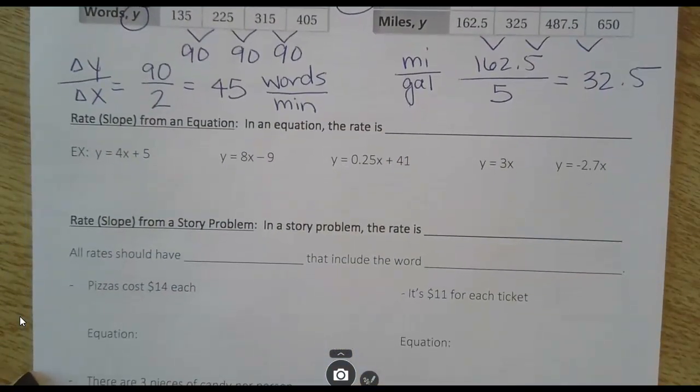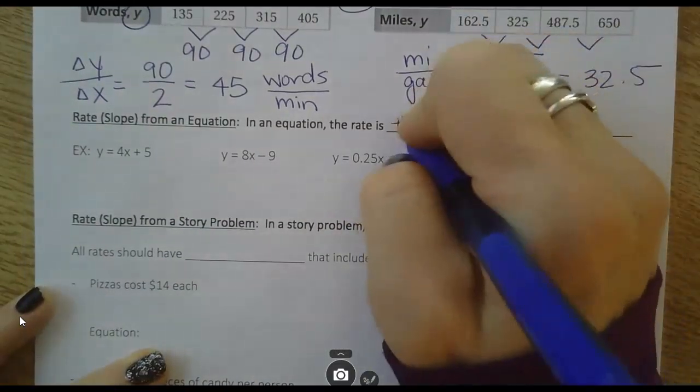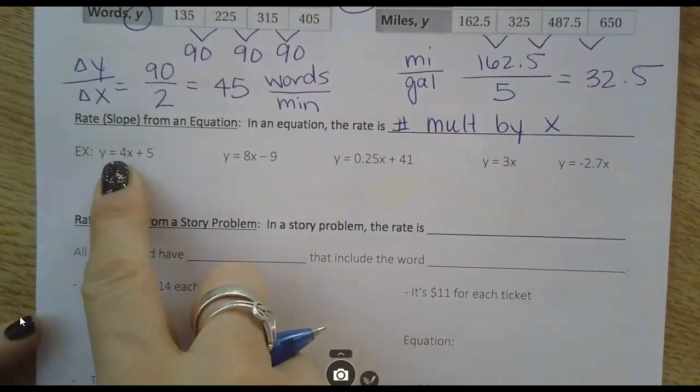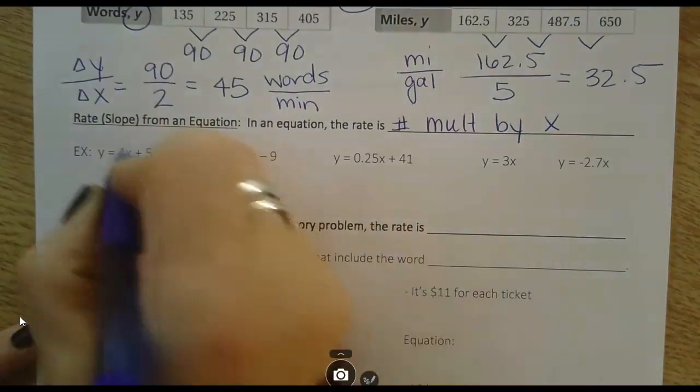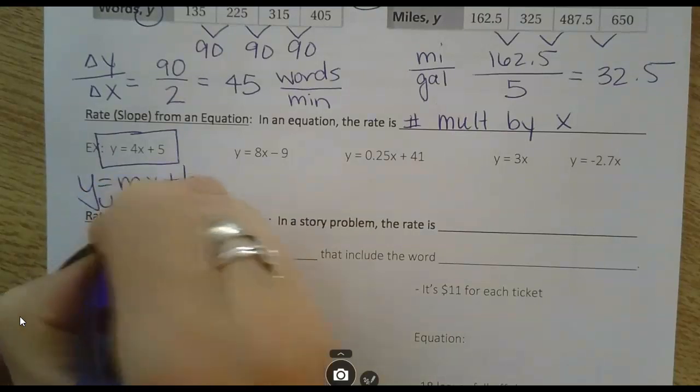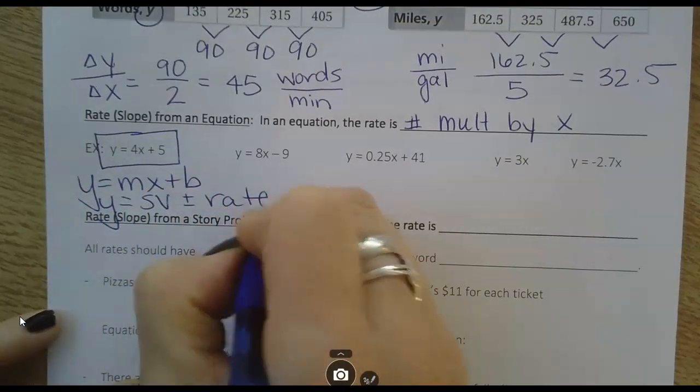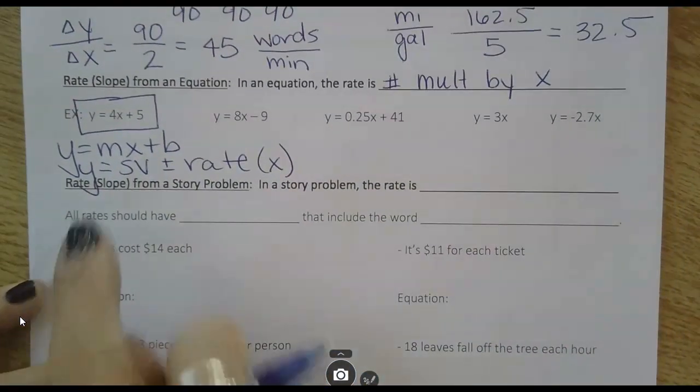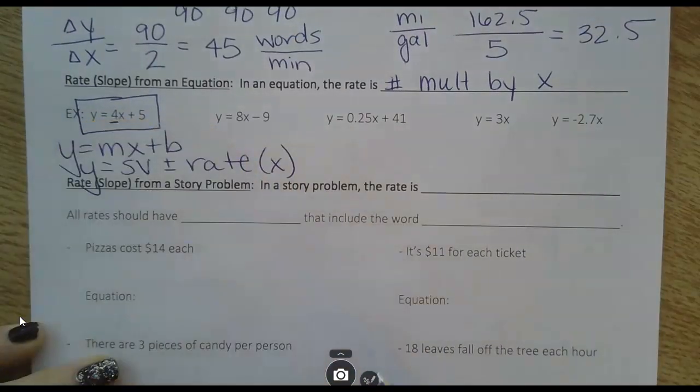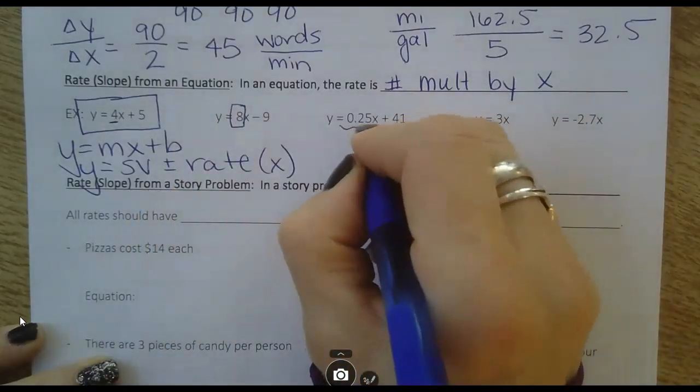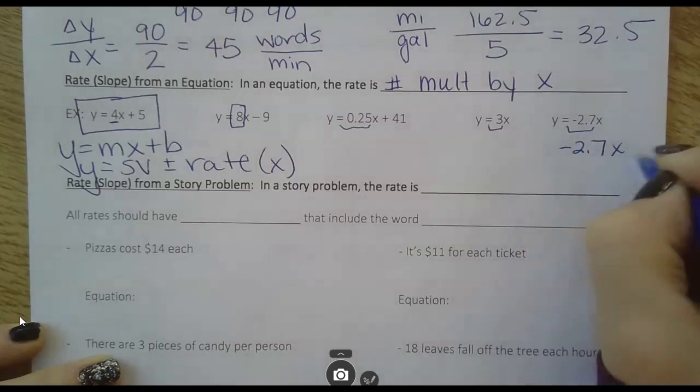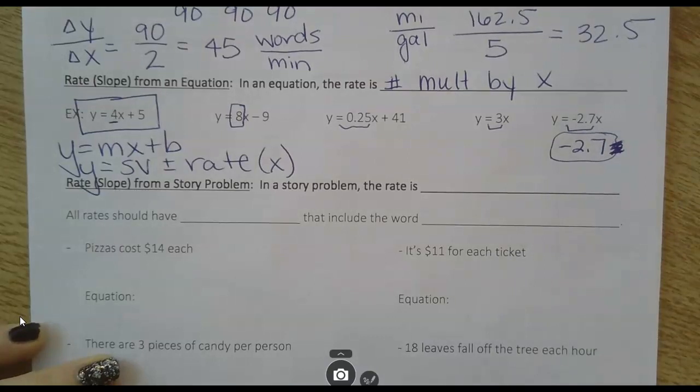Let's look at an equation. The rate or the slope from an equation is just the number multiplied by the x. In each of these equations, I can find the rate. It's whatever number is multiplied by the x, as long as it's written in this form - y equals x plus b form. Or you might remember from chapter 3, y equals a starting value plus or minus the rate with the x. As long as it's written where y is by itself, then you can just find the number with the x to be your rate or slope. So this is a slope of 4, slope of 8, slope of 0.25, slope of 3, slope of negative 2.7. Don't put the x as part of the slope. Just the number in front of the x is the slope.